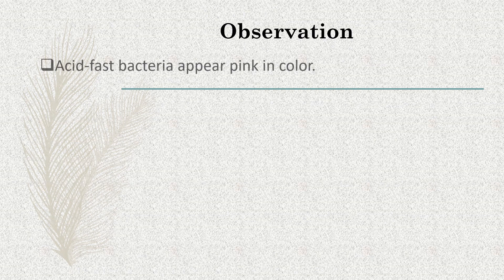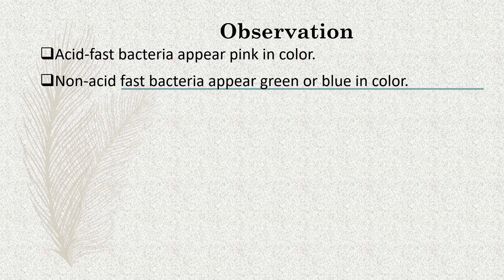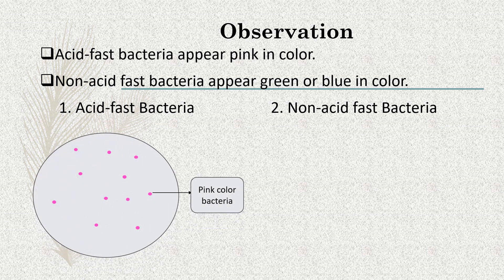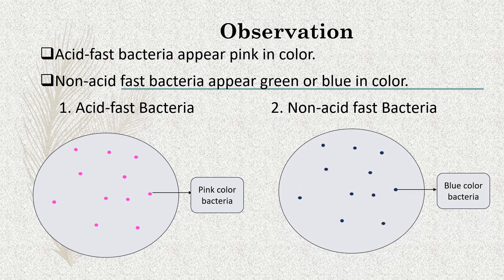Now let's see the observation. Acid-fast bacteria appear pink in color and non-acid-fast bacteria appear green in color. Let's see the diagrammatic representation. With the help of diagrams, I have tried to show the difference between acid-fast and non-acid-fast bacteria. The first diagram is of acid-fast bacteria — these cells appear pink in color; they take only ZNCF stain and don't get decolorized. The second diagram is of non-acid-fast bacteria — once decolorized, treated with methylene blue, the cells appear blue in color after water wash.